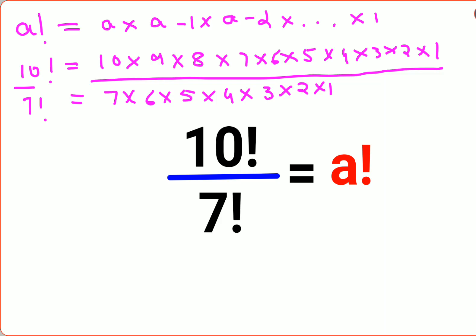you can see the entire 7 factorial is repeated in the numerator, so they will cancel and give you 1. So now you are just left with 10 × 9 × 8.